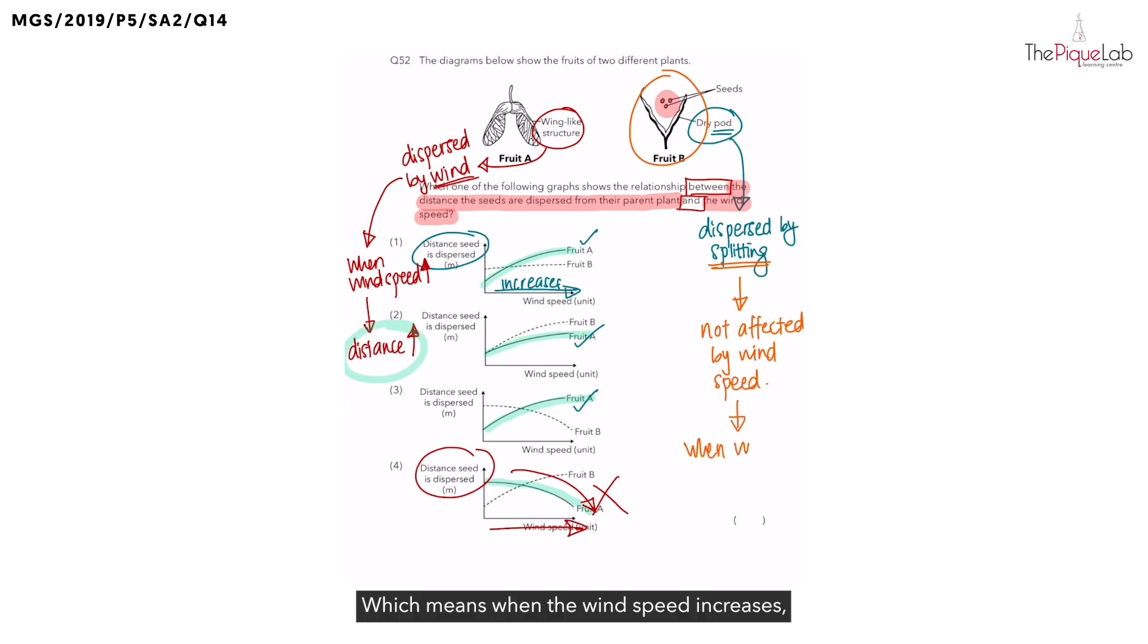Which means when the wind speed increases, should you see an increase in the distance the seed is dispersed? No. Should you see a decrease in the distance the seed is dispersed? No. So what should you see happening to the distance the seed is dispersed when the wind speed increases? The distance should remain the same.